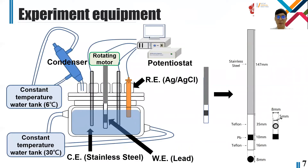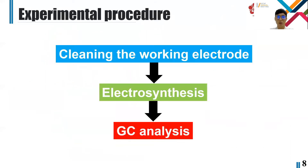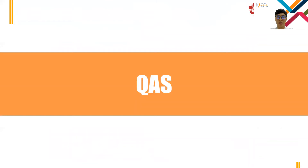In my experimental system, the working electrode was steel, and the counter electrode was stainless steel. The reference electrode was a silver/silver chloride electrode. The experimental steps were: first, clean the working electrode surface; second, perform the electrosynthesis; finally, conduct the GC test. Now I will introduce the results.